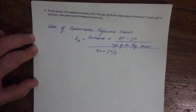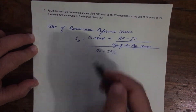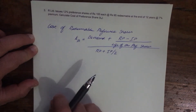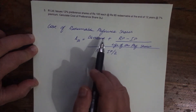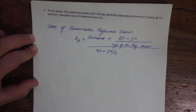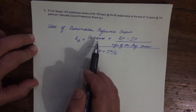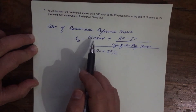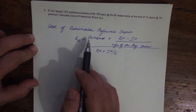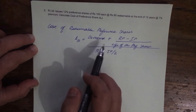If you look at this problem, the formula is very similar to KD — cost of redeemable debenture. However, the point of difference is only dividend. Now, do you know why we don't have to deduct tax from dividend? For interest, we use I multiplied by (1 minus tax rate).